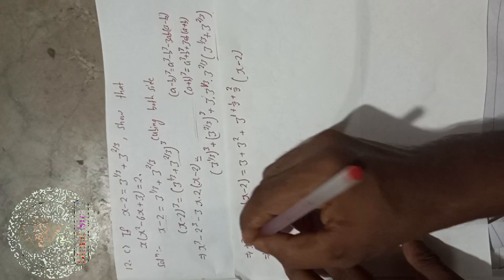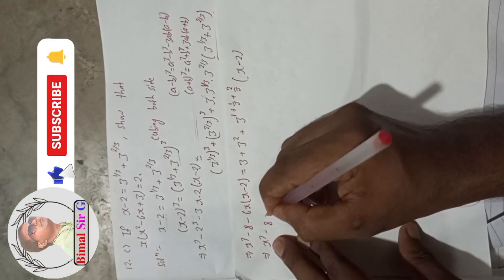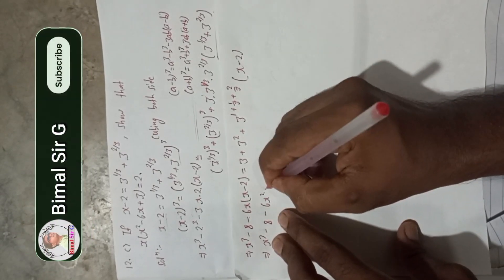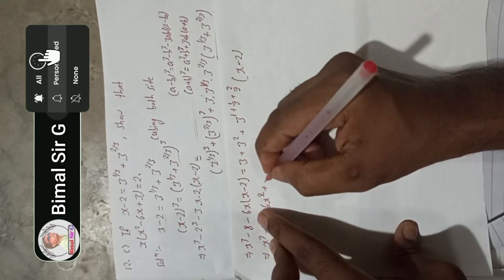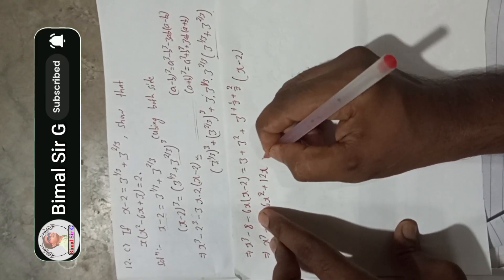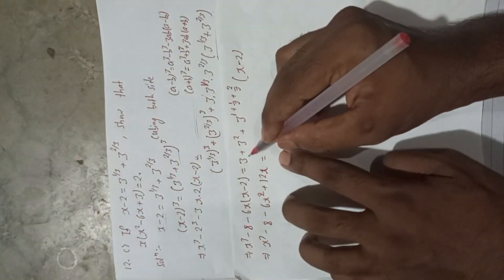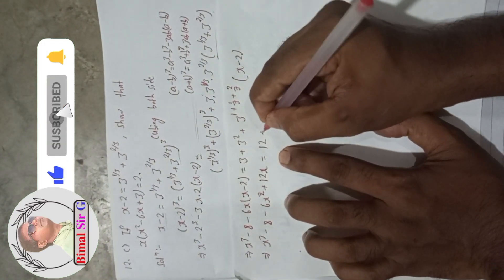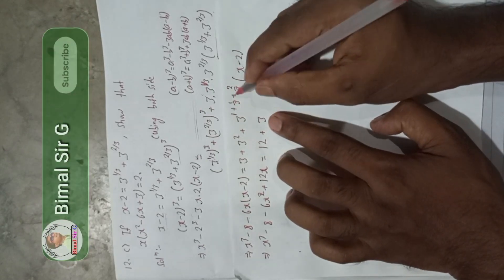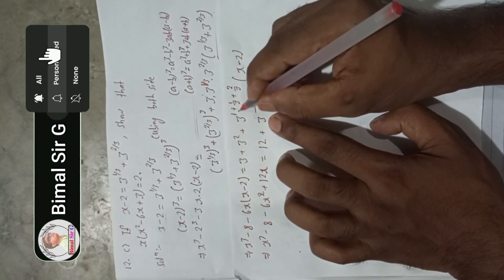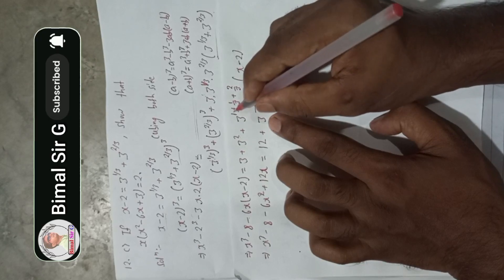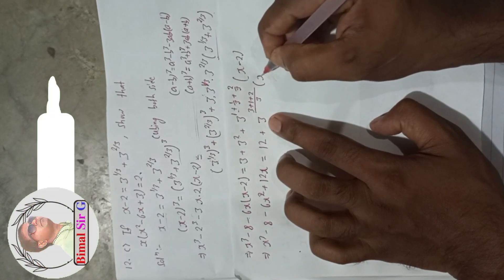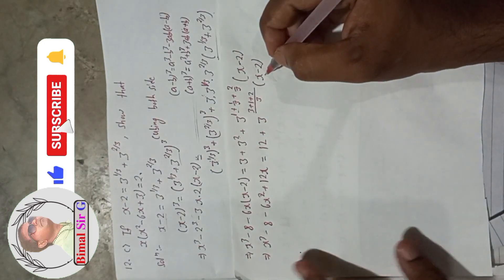This implies: x³ minus 8 minus 6x² plus 12x is equal to 3 plus 9, which is 12, plus 3 to the power — taking the LCM of 3, the exponent is 3 by 3 which is 1 — so that gives 3 to the power 2, which is 9, times (x minus 2).